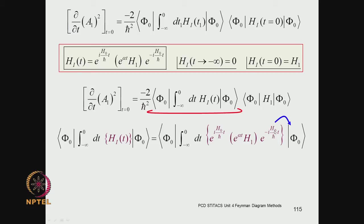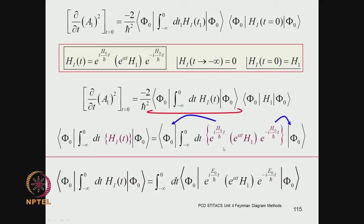Now, you have the H_0 operator here, which is an infinite power series, but phi_0 is an eigenstate of H_0. So you get an eigenvalue equation, and when you sum up the infinite series you recover the exponential function but with the eigenvalue of H_0 rather than the operator. You will have e to the minus i*e_0/h-bar*t from this operation, and similarly on the left. These terms are just scalar numbers — the e to the i*e_0/h-bar*t and e to the minus i*e_0/h-bar*t cancel each other.